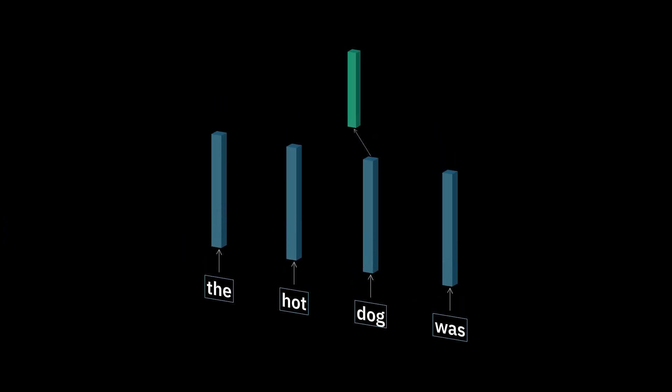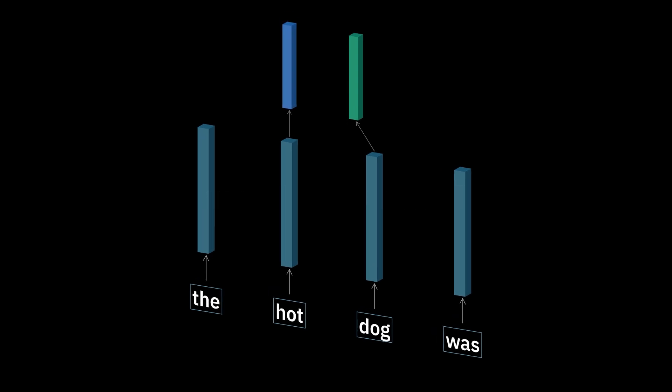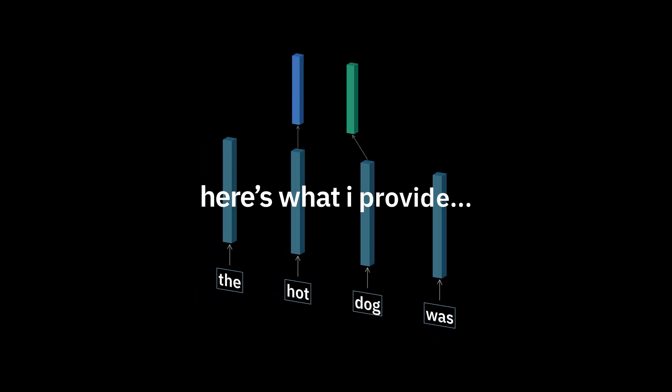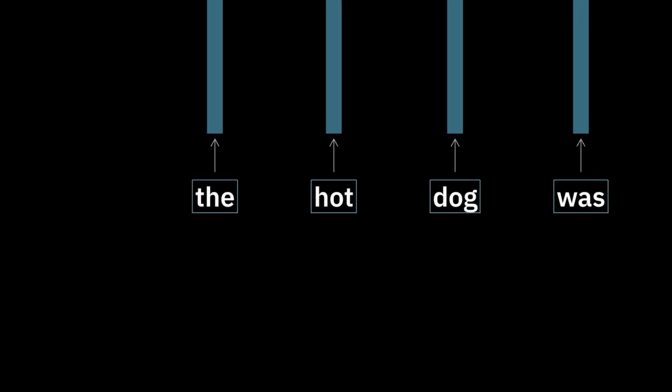To turn this into this, let's project dog's embedding to a new vector called Q that says 'what do I care about?' Then project hot into a vector called K that says 'here's what I provide.' If we take the dot product of Q and K, it says how much dog should pay attention to hot. Do the same for every token and squish them with softmax so they all add up to one. This is now our attention scores.